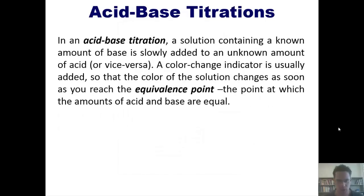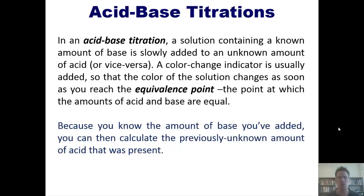In an acid-base titration, a solution containing a known amount of base is slowly added to an unknown amount of acid, or vice versa. A color change indicator is usually added so that the color of the solution changes as soon as you reach the equivalence point, which is the point at which the amounts of acid and base are equal. Because you know the amount of base you've added, you can then calculate the previously unknown amount of acid that was present.